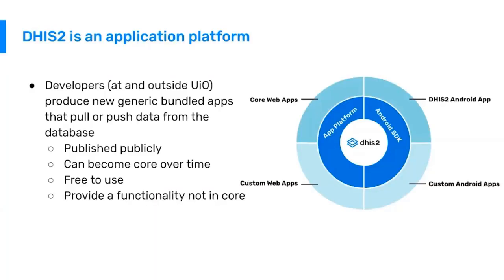As we mentioned previously, DHIS2 is an application-based platform. The University of Oslo develops about 30 core applications that we consider to be the minimal functionality that countries need to have DHIS2 serve as a national health management information system. All of the applications that the University of Oslo makes are publicly available and free to use.